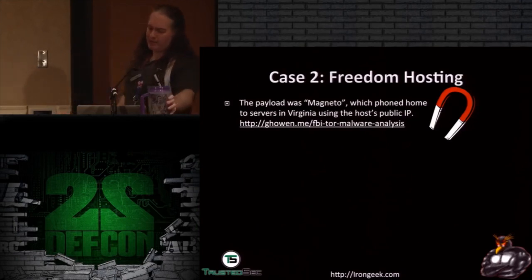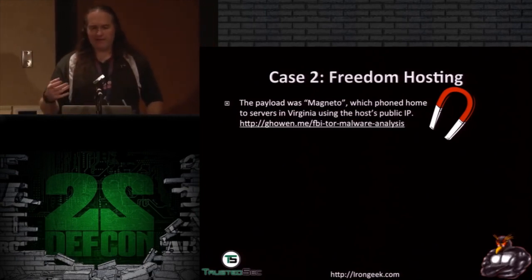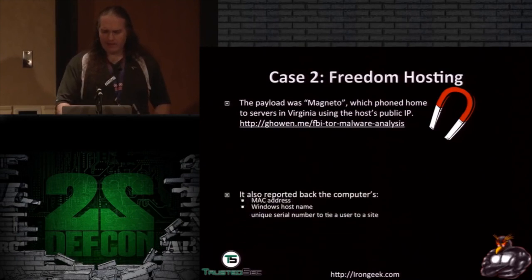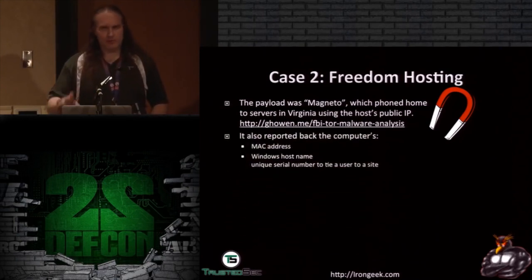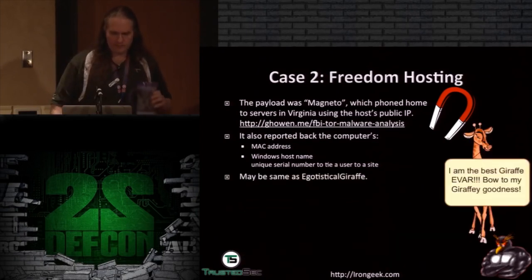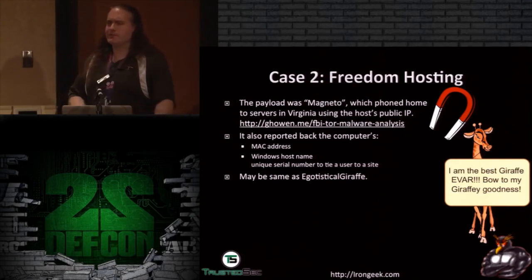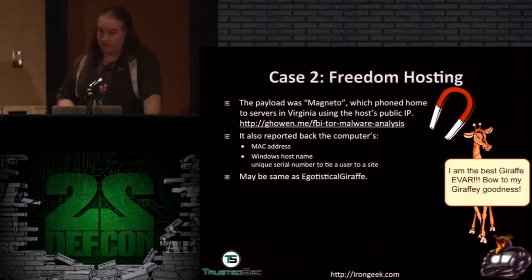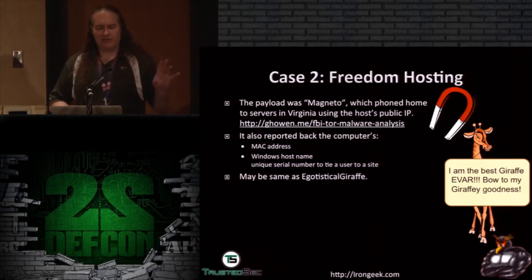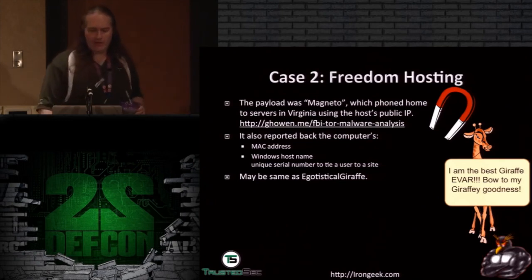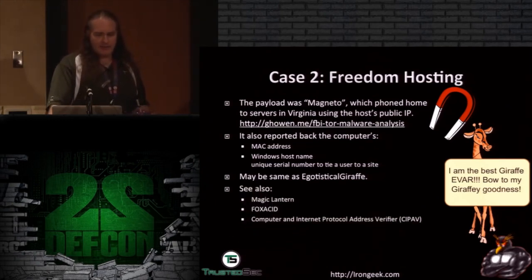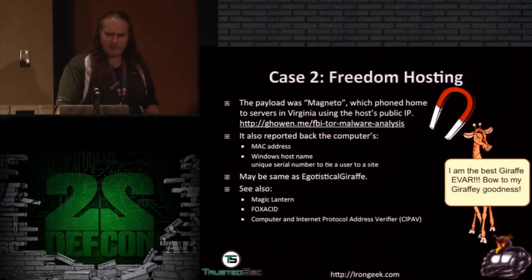They installed a piece of malware called Magneto, which would phone home to a service in Virginia and report things like the host's public IP address, the MAC address to narrow it down to the machine, the Windows host name, and a unique serial number to tie the user to the site visit. This sounds similar to something in the Snowden documents called the 'Egotistical Giraffe' project — a beautiful name — though I'm not sure it's exactly the same exploit. Other law enforcement malware examples include Magic Lantern and FOXACID from the NSA, and possibly GCHQ's equivalent. Getting malware installed on someone's machine to track them has been used many times.